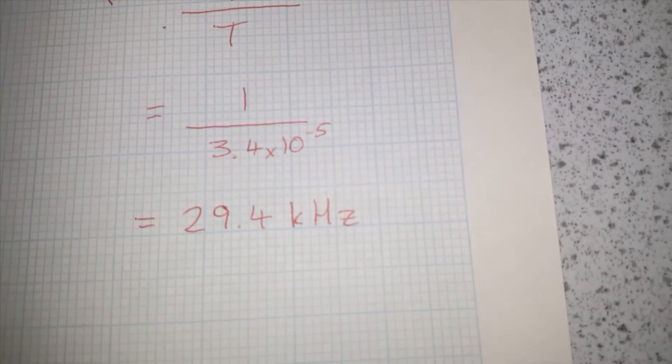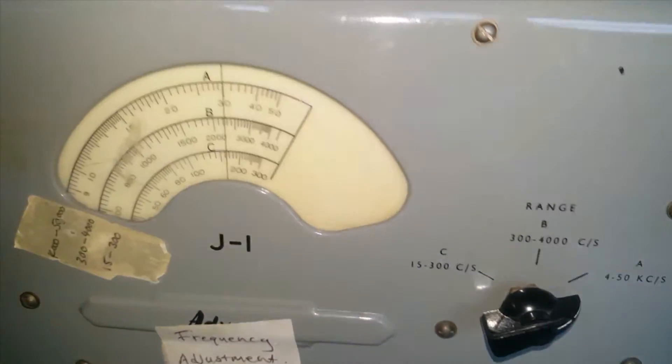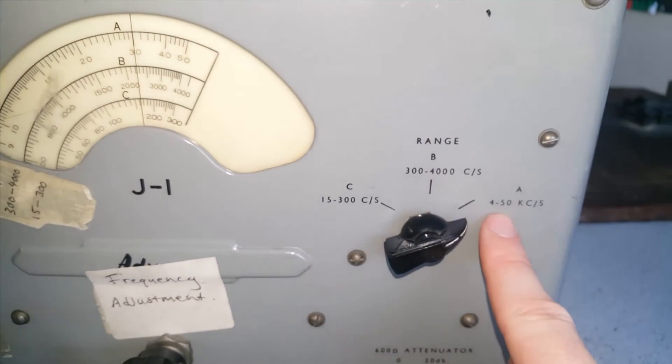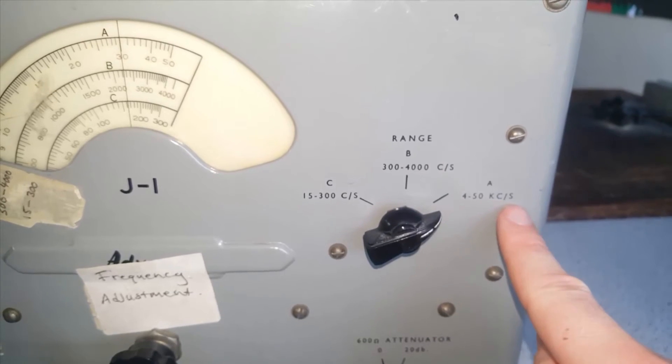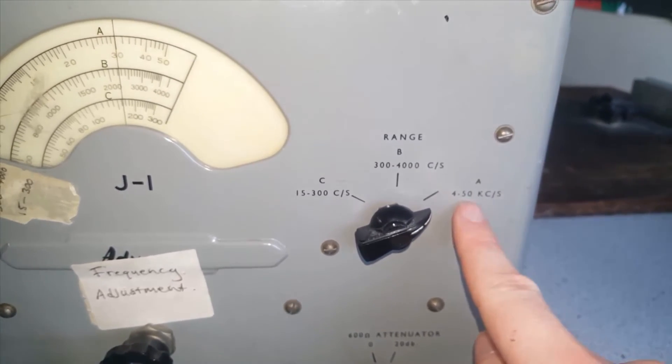How does that compare to what the signal generator claims to be producing? Well if we look at our signal generator here, the dial is turned to A, which is measuring between 4 and 50,000 cycles per second. So that's between 4 and 50 kilohertz.